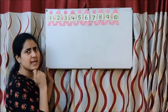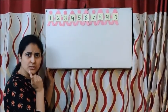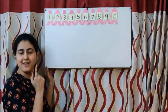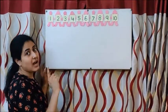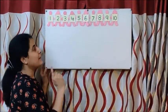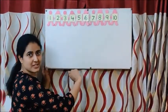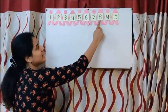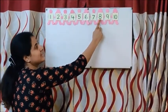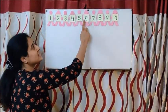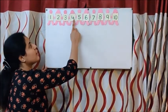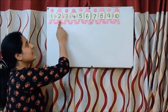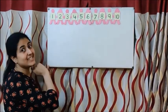Now we just sang for boys. What about girls? Let us start from number ten for girls. Ten little, nine little, eight little Indians; seven little, six little, five little Indians; four little, three little, two little Indians; one little Indian girl.